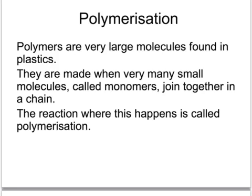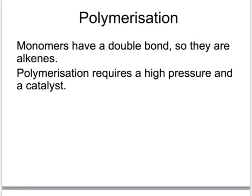Two key terms you must understand are the terms polymer and monomer. The monomer is the small double-bonded molecule which is the building block from which polymers are made. Polymers, however, are the very large chain molecules found in plastics. The reaction that joins these monomer molecules together to make a polymer is called addition polymerization. Polymerization occurs because the monomers have a carbon-carbon double bond covalent bond, which makes them alkenes. These double bonds can break open, and because of the high pressure and catalysts used, it allows the monomer molecules to join together as a long chain polymer.